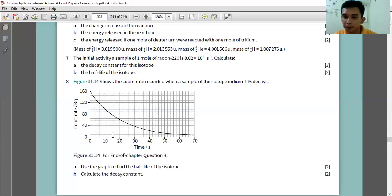So what is the time when the count rate falls from 160 to 80? Then you will get the half-life only by reading the graph. And then after that, calculate the decay constant.